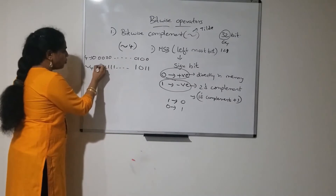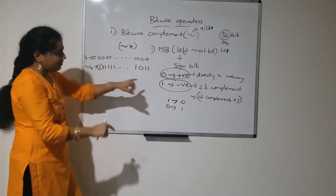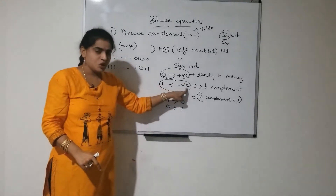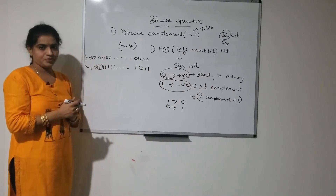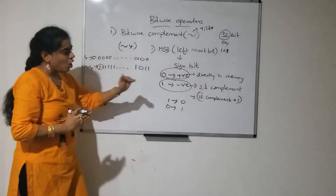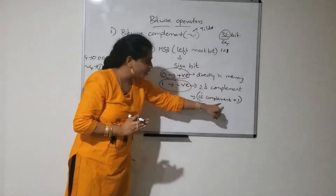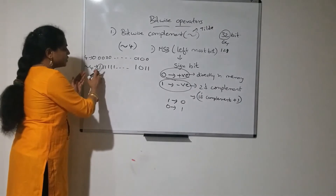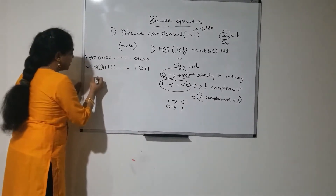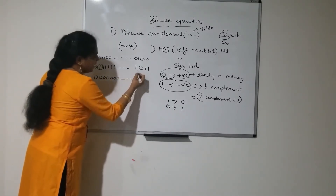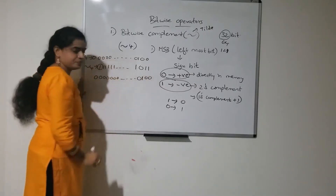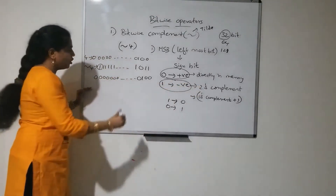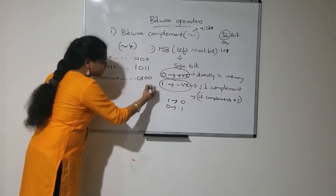After complementation, the most significant leftmost bit is 1, which means it is treated as a negative number. So you have to represent the 2's complement of this result. To get 2's complement, first perform 1's complement — convert 1s to 0s and 0s to 1s — then add 1. Doing so gives us 1 0 1 0 0 0 0 0, which is the 2's complement representation.